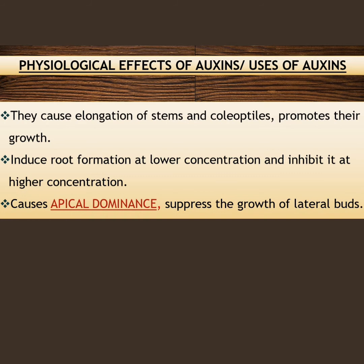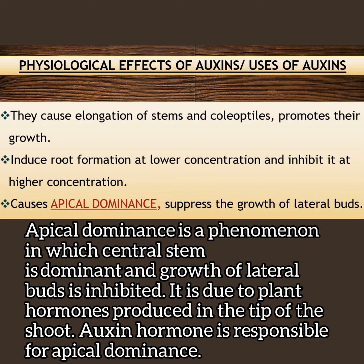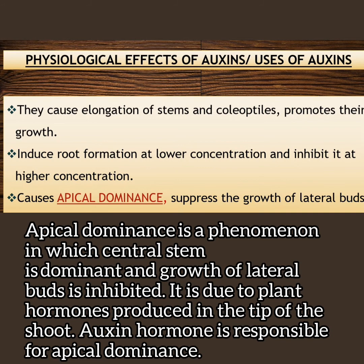Third point: auxins cause apical dominance and suppress the growth of lateral buds. Apical dominance is the phenomenon in which the central stem is dominant and the growth of lateral buds is inhibited. It is due to the plant hormones produced at the tip of the shoot.